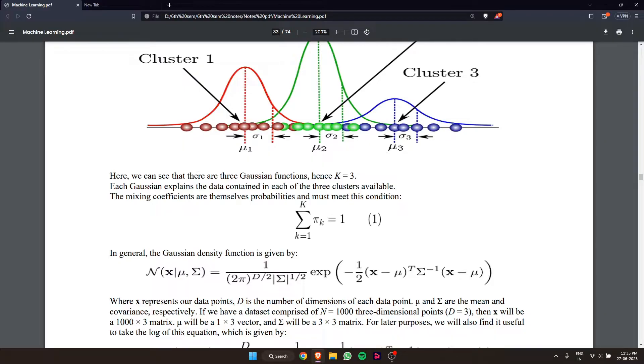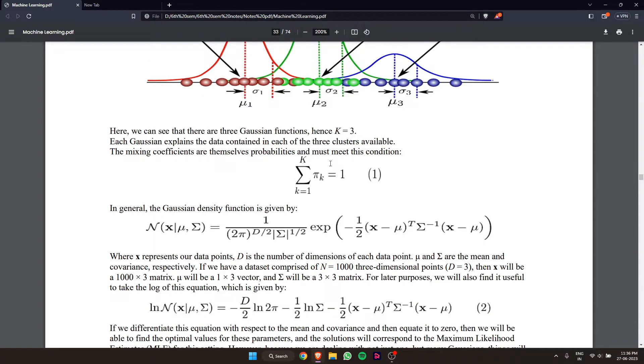Each Gaussian explains the data contained in each of the three clusters. The mixing coefficients are themselves probabilities and must sum to 1.